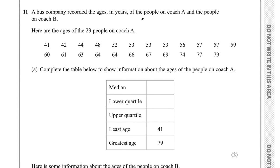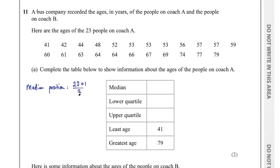Question 11 says a bus company recorded the ages of people on Coach A and Coach B. Here are the ages of the 23 people on Coach A. Part A says complete the table showing least age, greatest age, median, lower quartile and upper quartile. When given a list and asked for the median, first check the numbers are in order. This list is already in order. To find the median position with 23 values: 23 plus 1 divided by 2 equals 12th position.